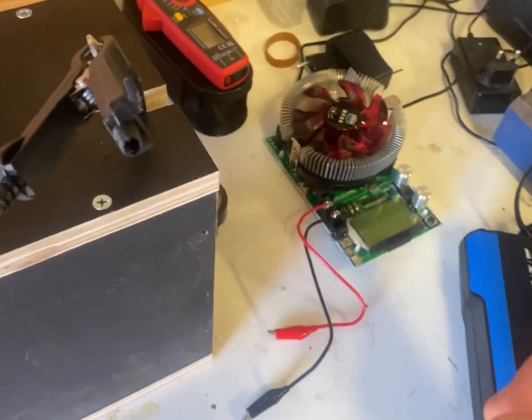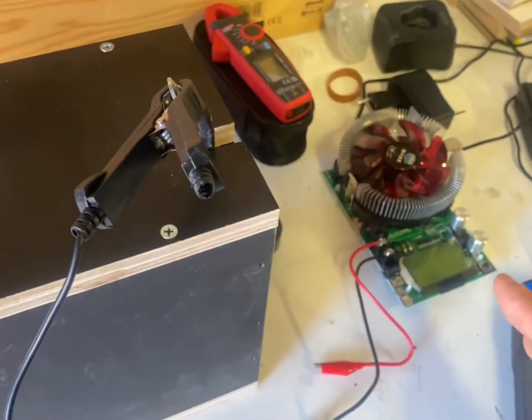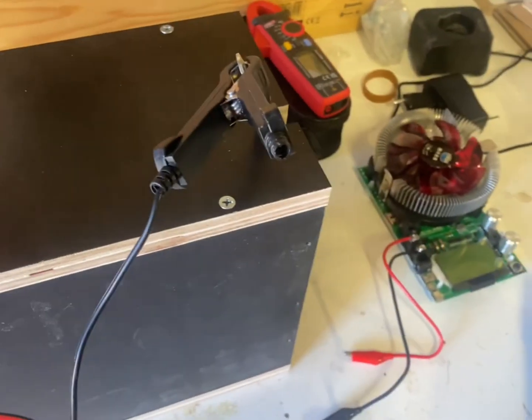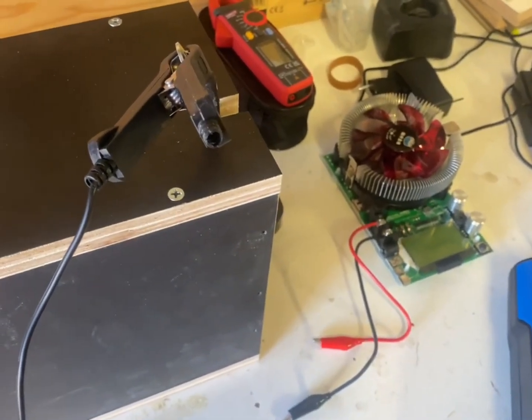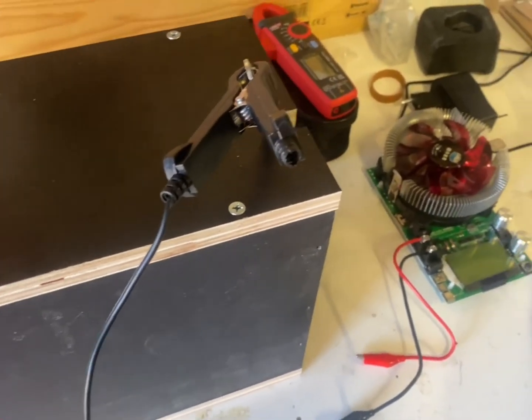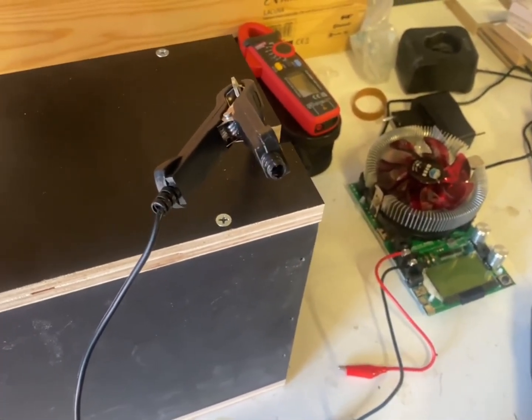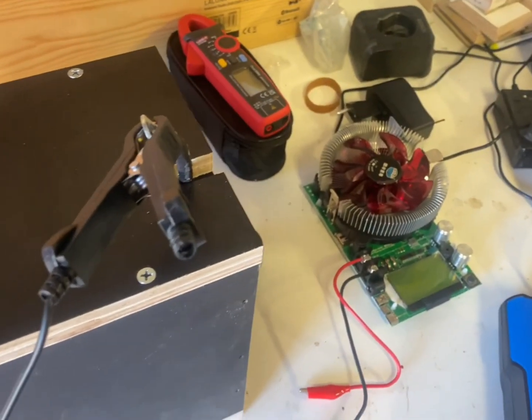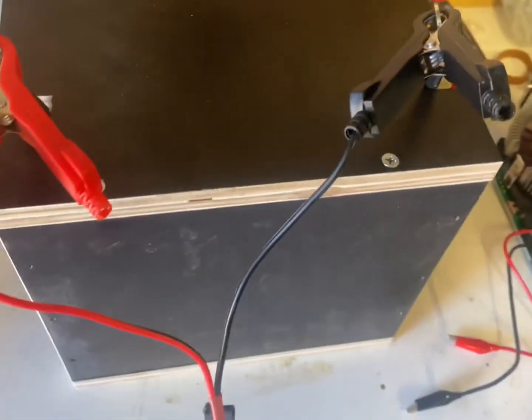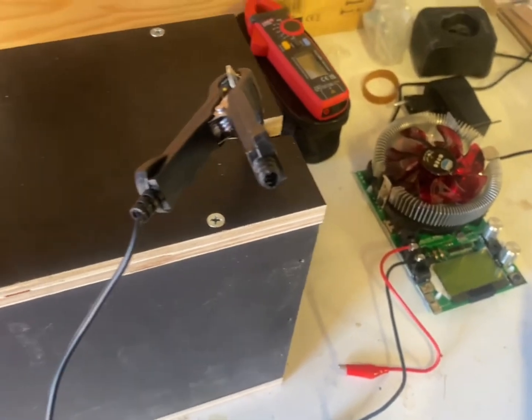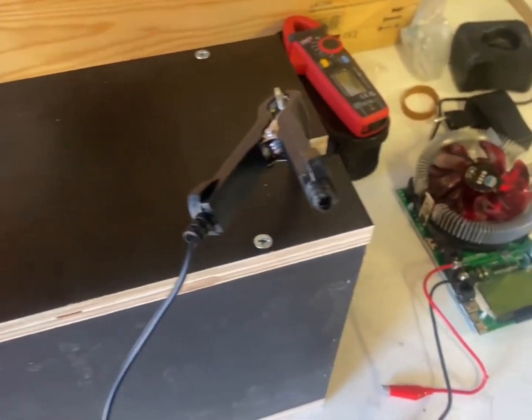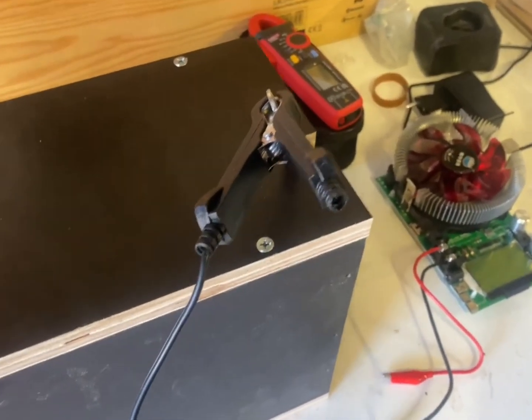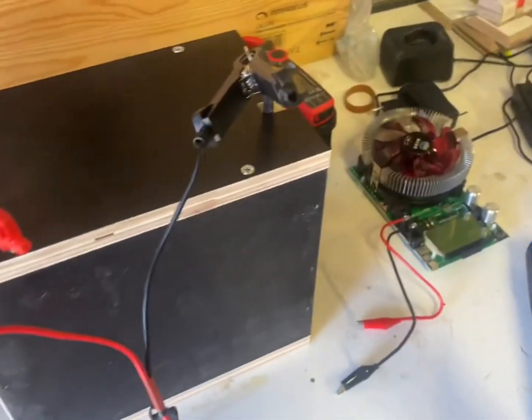I just saw that the Daly BMS got to power at 11.5 volts, which is 2.8 per cell. So we did have a little bit more to go. I could go as low as 10 volts on a capacity test I guess. So I think we're probably above 50 amp hours anyway, so that's a good thing. Now we're charging it up and getting ready for another test.